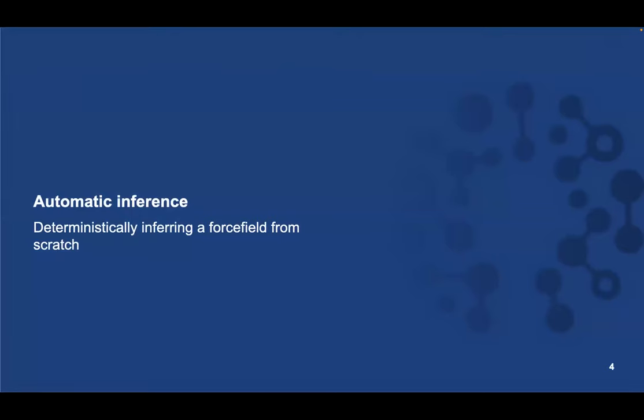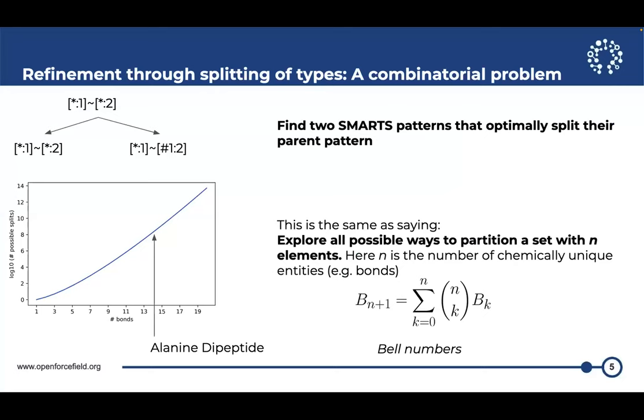So now that we have basically set the ground for everything, we want to talk about automated inference. We want to infer force fields from scratch based on some data that we see or that we know. So we start on the top left corner where we say, for instance, for bonds. In my universe, there's just one bond type, which is encoded with this SMARTS, meaning star tilde star, so any atom with any bond bonded to any other atom. And now we're going to split that into two bond types. So we're looking for a partition for two SMARTS patterns that sort of split our initial parent SMARTS pattern in an optimal way. And this is the same as asking: please explore all possible ways to partition a set with n elements. And this is encoded by something called Bell numbers, which is part of a well-known mathematical combinatorial problem.